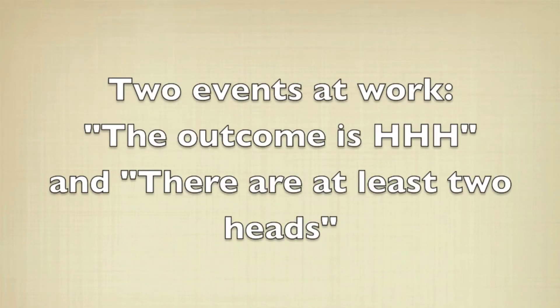In the previous example, there were two events at work. The first one was what we were looking for, and the second one was the assumption. To actually compute the probability, we restricted the sample space based on the second event, and we looked to see how many satisfied the first event.